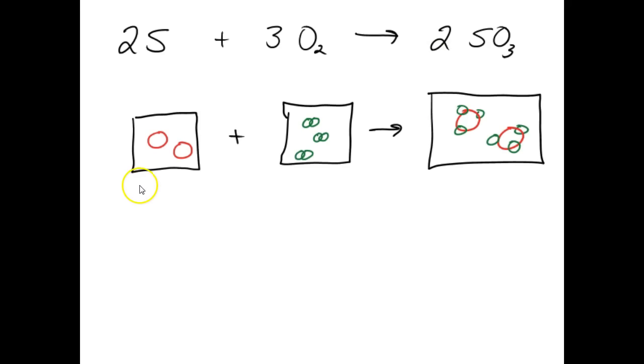If you look at these particle diagrams, you can see that whatever's on the left-hand side of the arrow, two big red balls, is over on the right-hand side of the arrow, two big red balls. Conservation of mass, we've learned about that before.